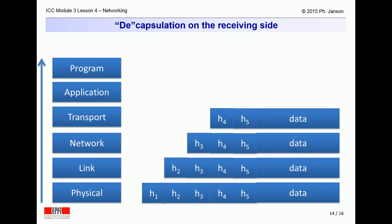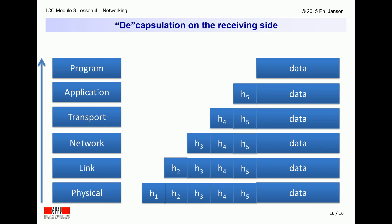The network layer processes and removes its network layer header, H3, and passes the remainder of the message to the transport layer. The transport layer processes and removes its own transport layer header, H4, and passes the remainder of the message to the application layer. The application layer finally processes and removes its own application layer header, H5, and delivers the actual data to the destination program on the receiving computer.